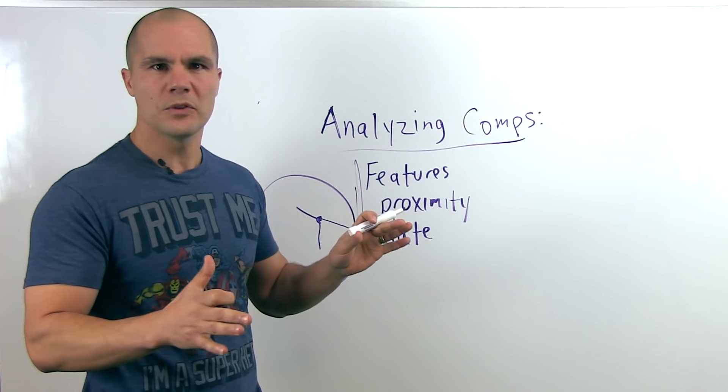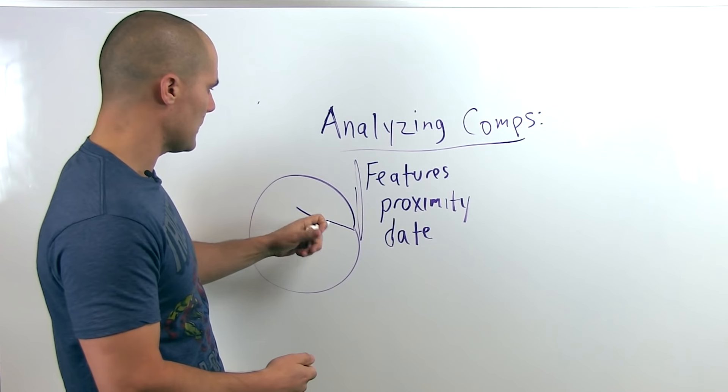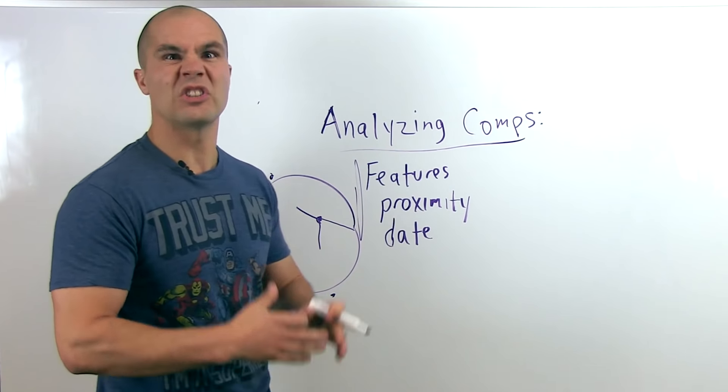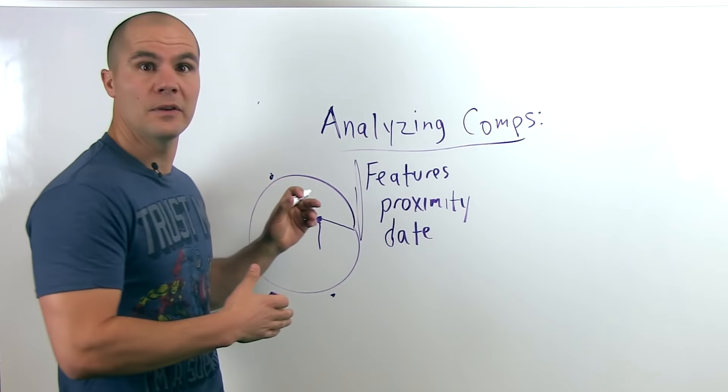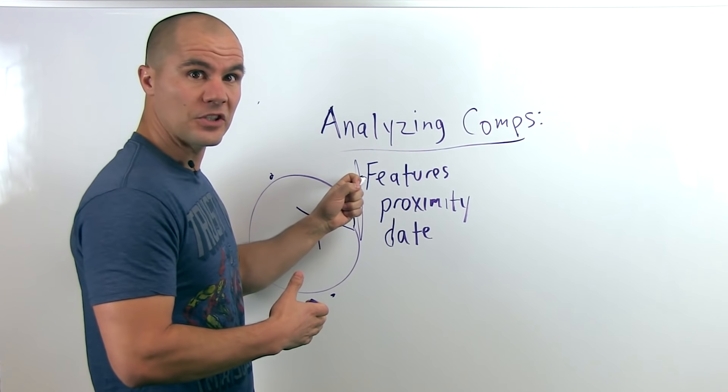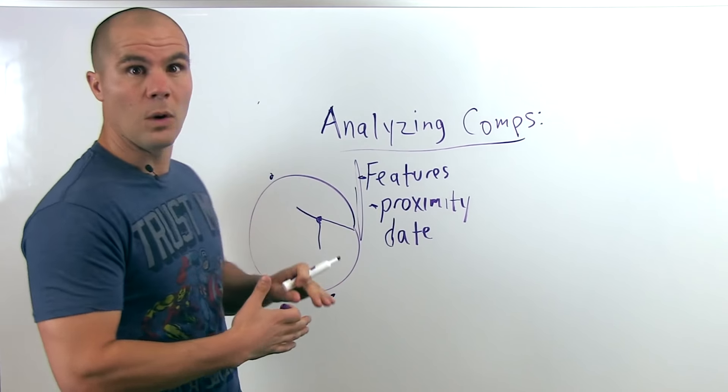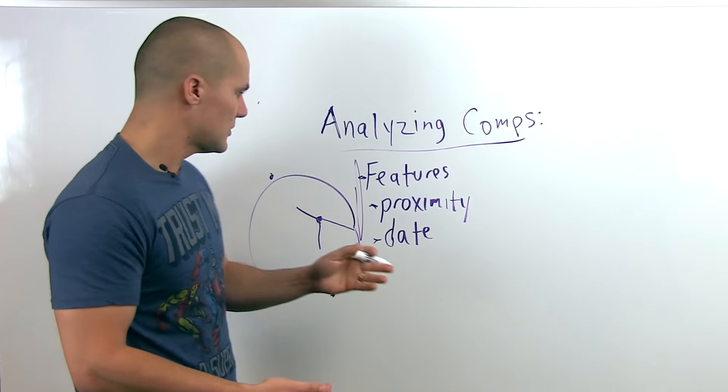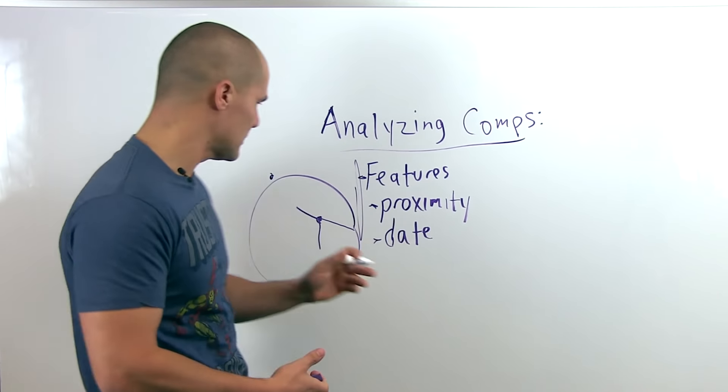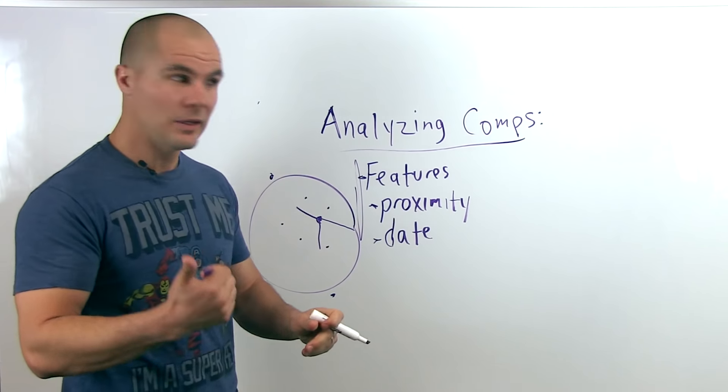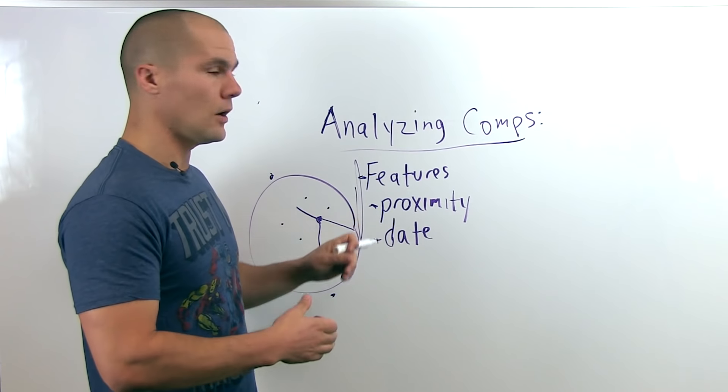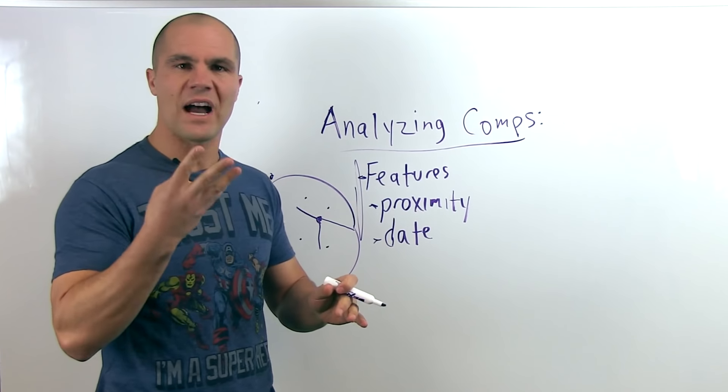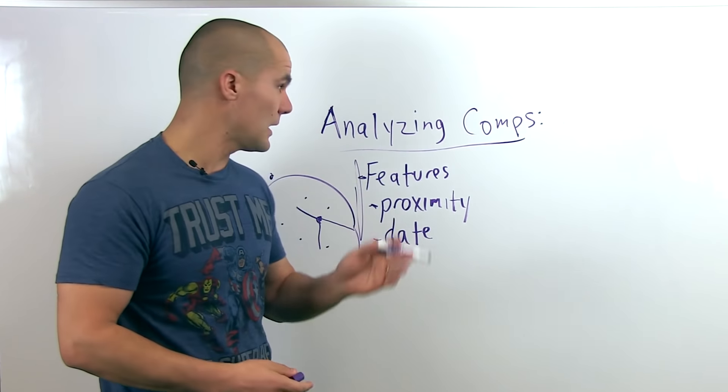So keep in mind what a lot of people do is they do this mistake. Here's the subject property, right, and they say, oh, I really like this comp here. Oh, I really like this comp here. Why? Because it's sold for really high, so I want to use that comp, even though it may not be similar in features, it may not be close by—could be, you know, a mile or so away—or it could be old, you know, a year or so old. So that probably is not the most relevant comp, because there's going to be other comps that are probably closer, sold sooner, and are more similar in features. Okay, so keep that in mind. Make sure you're picking the five most relevant comps when you're analyzing your comps.